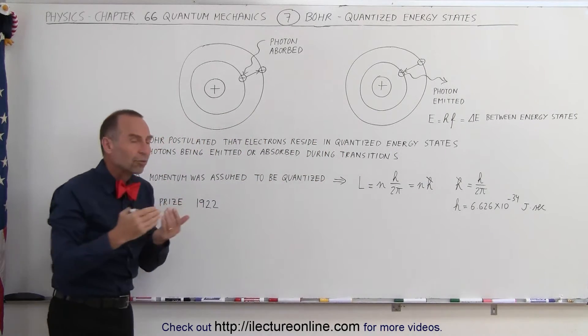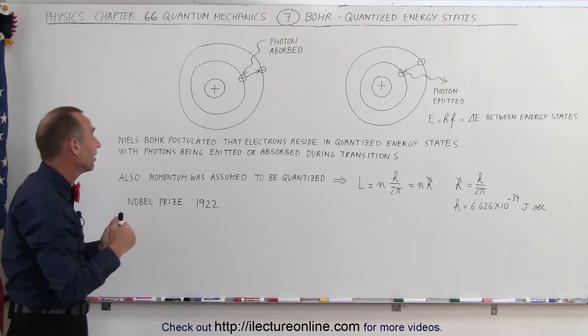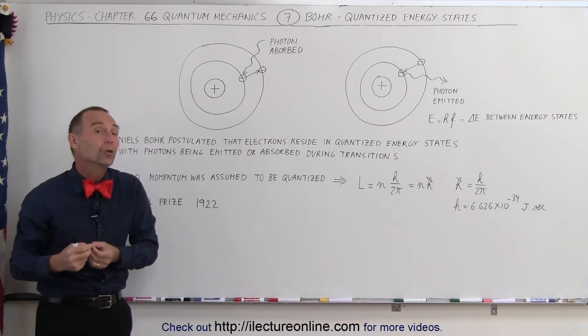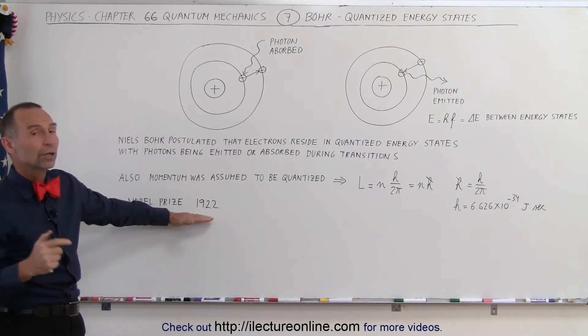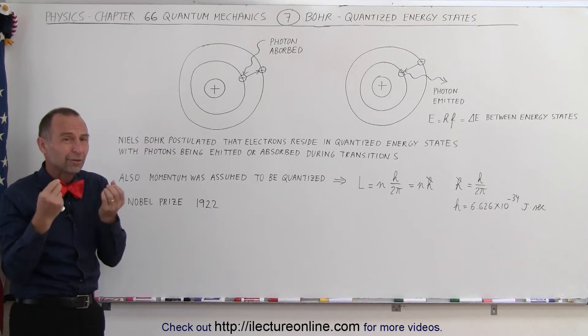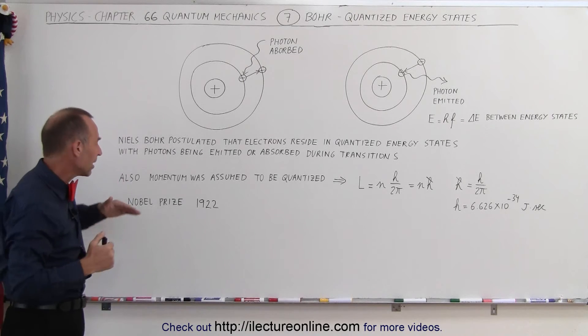Now, that postulation that electrons resided in quantized states and that photons were either being emitted or absorbed during transitions earned him the Nobel Prize back in 1922. He also took another leap—not really faith, but through careful thinking.